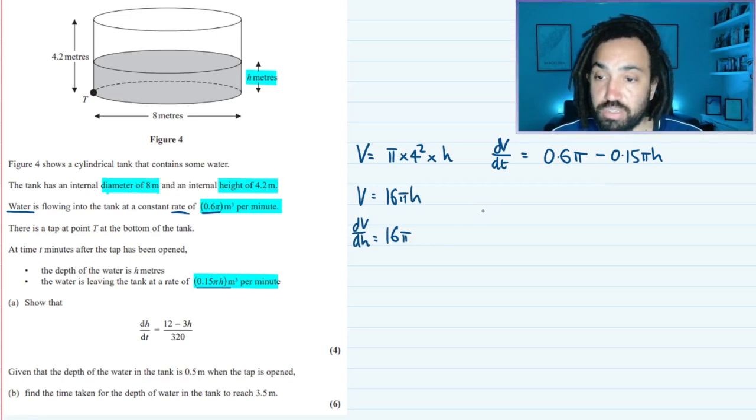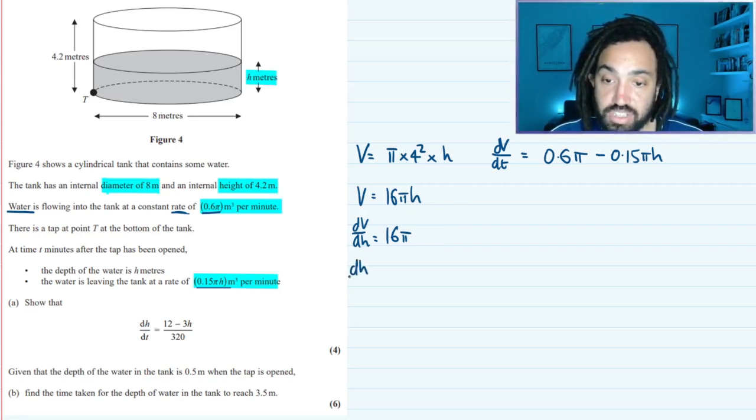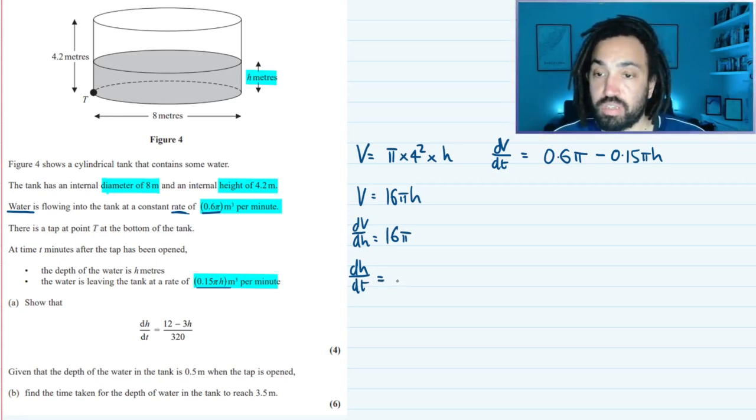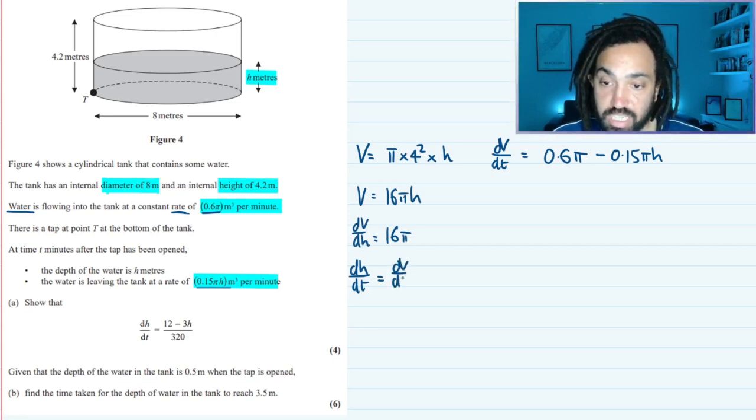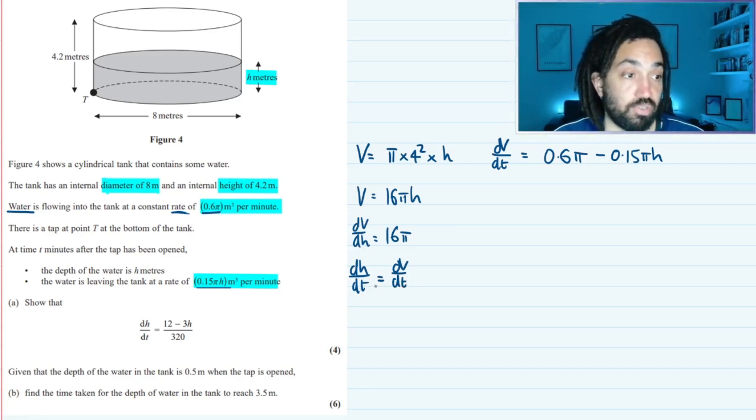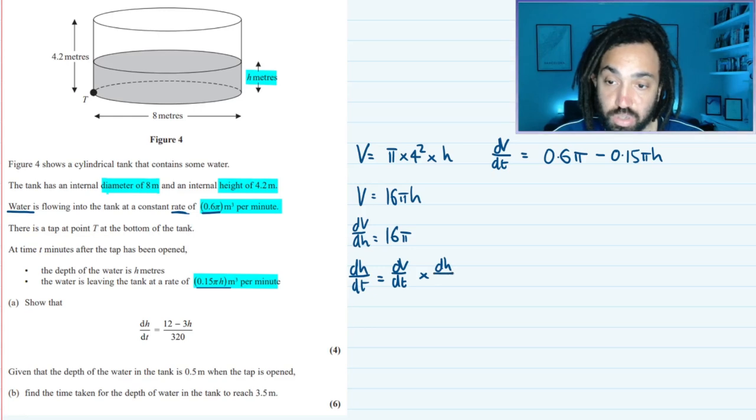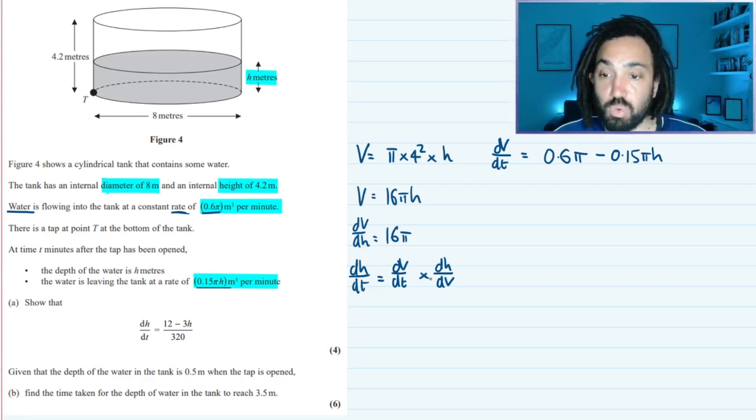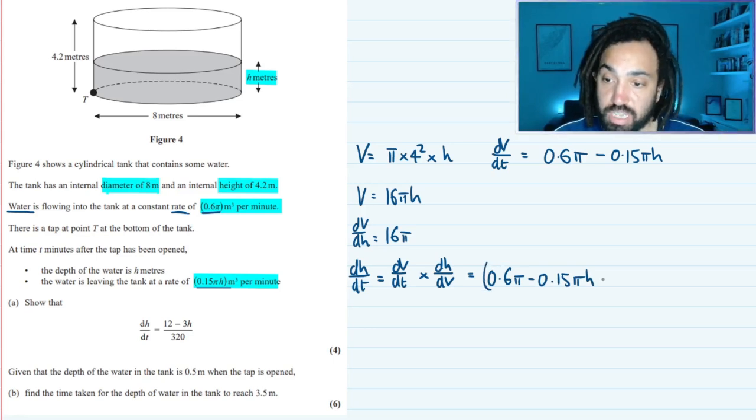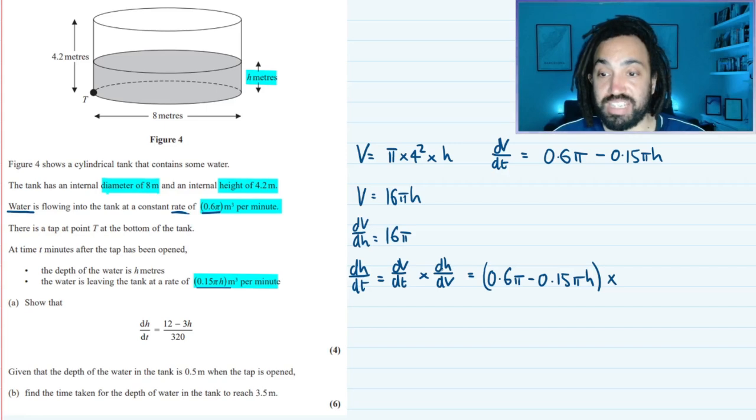Okay great, so now what I need to do is figure out what I'm actually looking for which is dh/dt. So I can write here that dh/dt is equal to, and by the chain rule I can have dV/dt, and I'll need to multiply it by dh/dV. So dV/dt is 0.6π minus 0.15πh in brackets, and we're multiplying that by dh/dV which is the reciprocal of dV/dh so that's 1 over 16π.